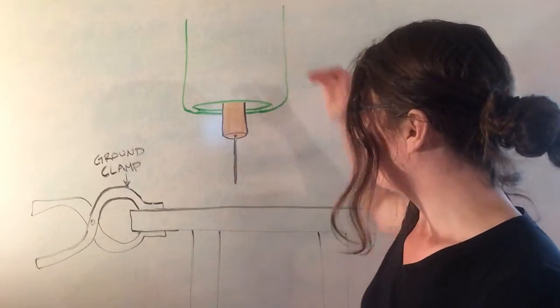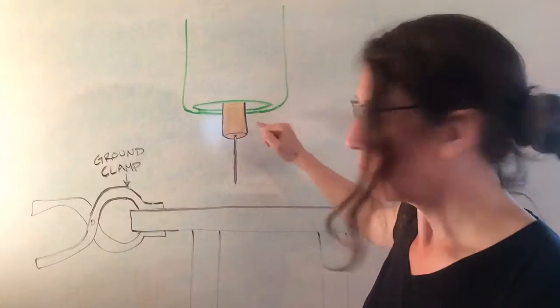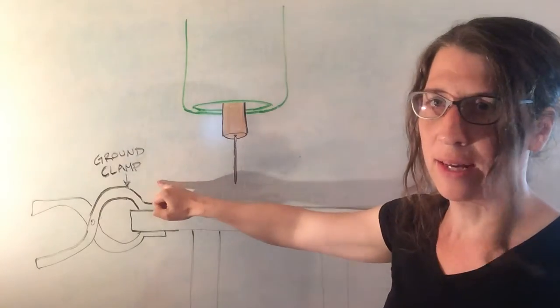So let's talk about the MIG welder. We've got our cup, we've got our electrode, we've got our wire, and we've got our ground clamp.